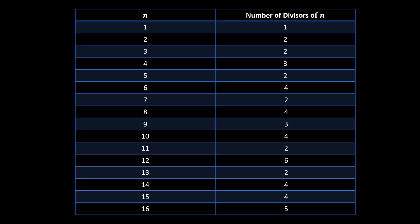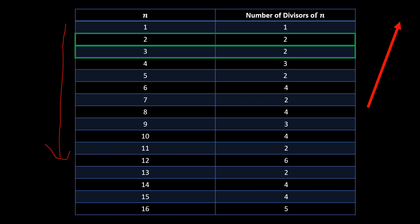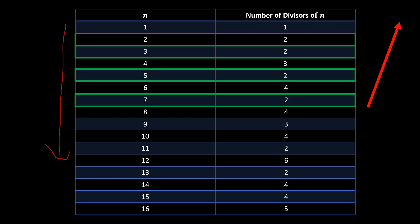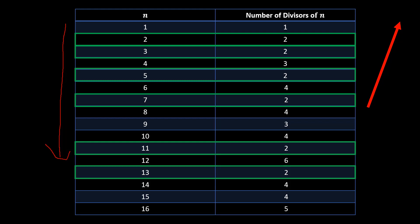This is a chart I had in another video — I'm going to put the link in the video description and in the upper right corner. This chart has the first column listing the numbers from one through 16, and the second column shows the number of divisors of each number. So one has one divisor, two has two divisors. The prime numbers by our definition are the ones with exactly two positive divisors: two, three, five, seven, eleven, and thirteen. Those are the prime numbers from one through 16. One is not considered prime because it has only one positive divisor.